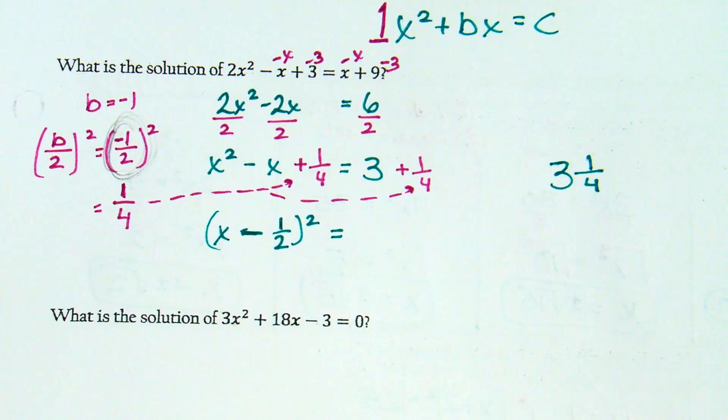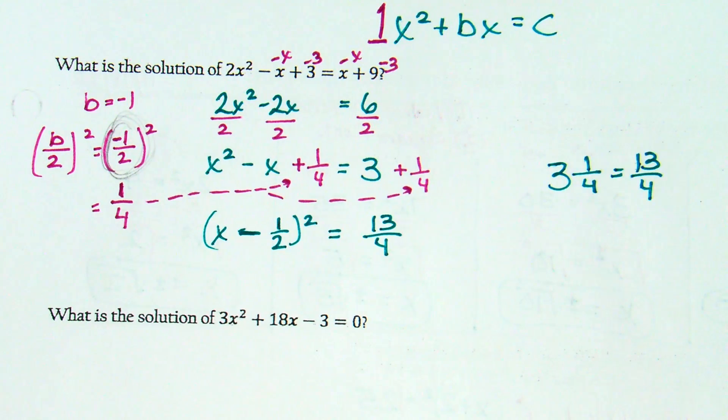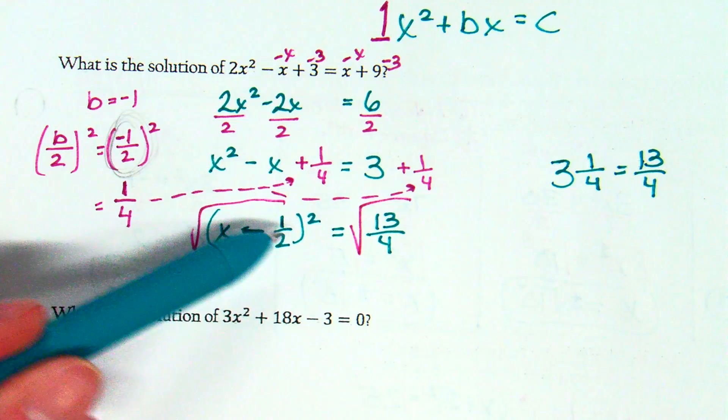Okay, that was step 3. Sorry, I forget my step numbers. Okay, step 3 was factor. Step 4. Square root both sides. What is the square root of something squared? It's just what's in the parentheses, right? The square root and the square cancel each other out. So, this is just x minus 1 half.